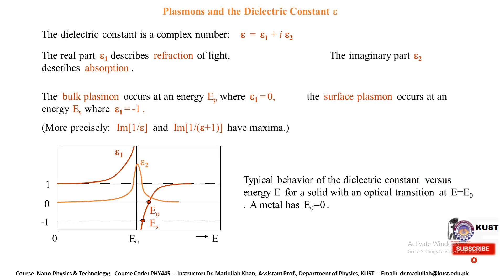The dielectric constant of plasmons is a complex number — a combination of real and imaginary parts: ε = ε₁ + iε₂. ε₁ describes the real part, which physically describes the refraction of light, while ε₂ is the imaginary part, which describes absorption. Bulk plasmons occur at energy Ep where ε₁ = 0, meaning refraction is zero. Surface plasmons occur at an energy where ε₁ = −1.